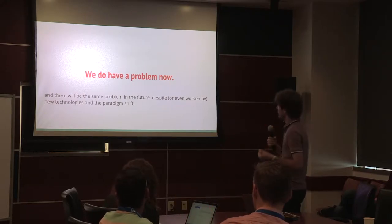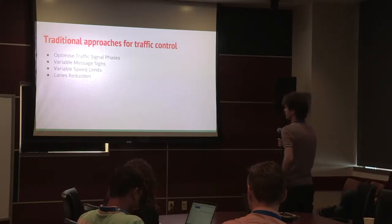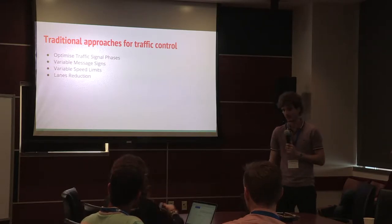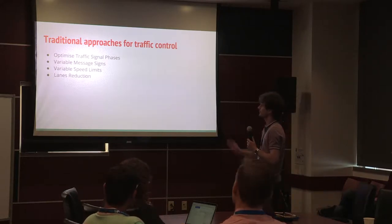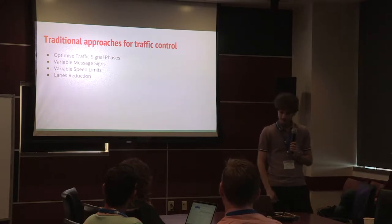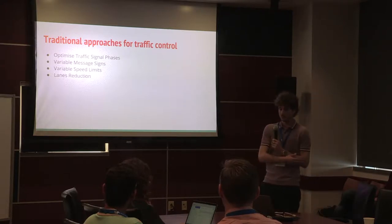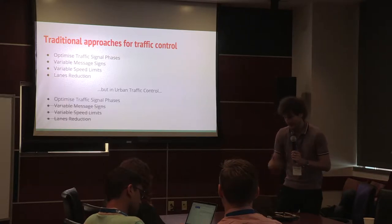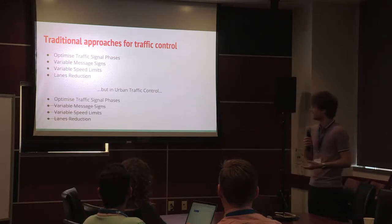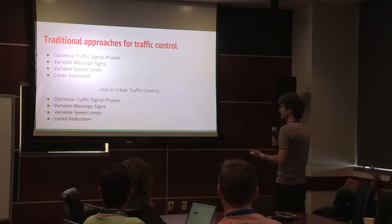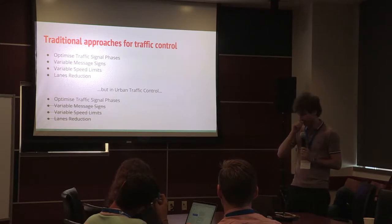We need to do something now, or as soon as possible. The traditional approaches used daily for traffic control include optimizing traffic signal phases, variable message signs suggesting detours or different roads, variable speed limits, lane reductions, and toll optimization. But in urban areas, the approach that delivers the best impact on traffic is the optimization of traffic signal phases — so that will be the focus of the rest of this talk.